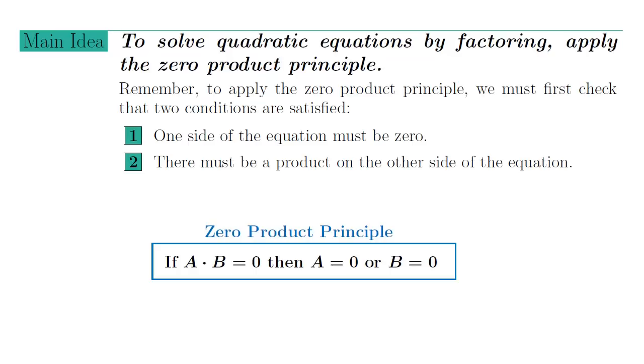When those two conditions are satisfied, then the zero product principle is applied. If A times B equals zero, then A is zero or B is zero.